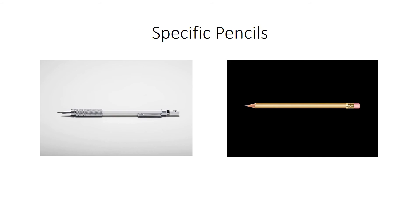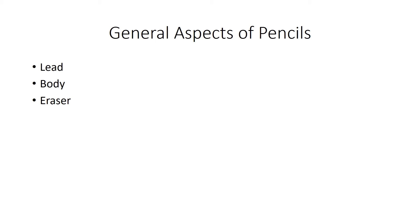Here are some specific pencils. One is gold, one is silver, one is wood, and one is mechanical. They have different designs. But there are things they have in common, like lead, the body, and the eraser. Those are general aspects of pencils.